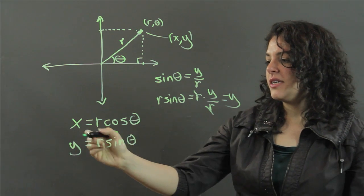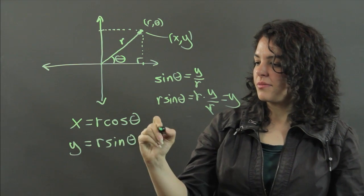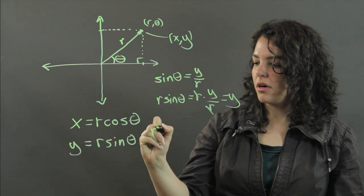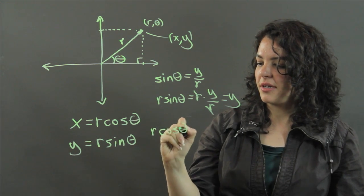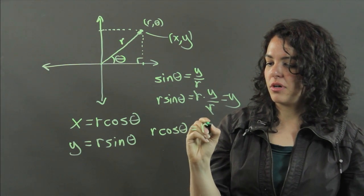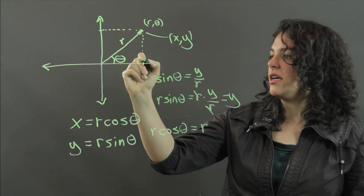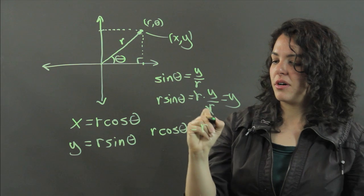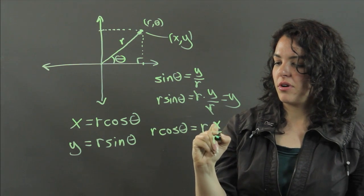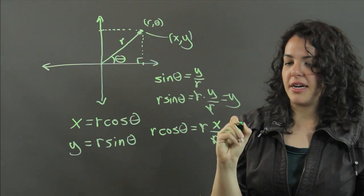And similarly, for getting x, r cosine of theta is equal to r times cosine, and cosine is adjacent over hypotenuse. Adjacent would be the x value over r, so x over r, r's cancel out, and I get x.